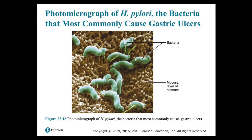Figure 23.18 shows a photomicrograph of Helicobacter pylori, the bacteria most commonly involved in gastric ulcers. Most ingested bacteria are killed by stomach acid, but H. pylori has found a way to neutralize the acidity of HCl in the stomach.